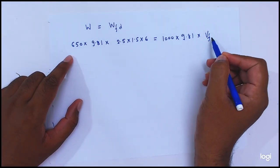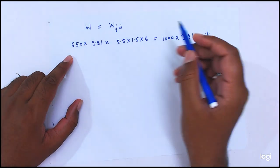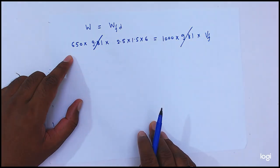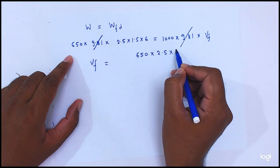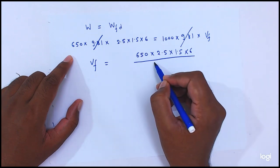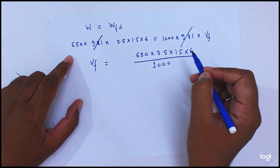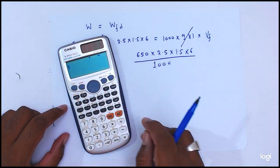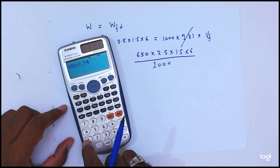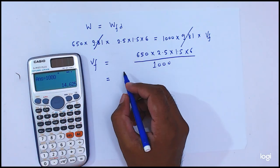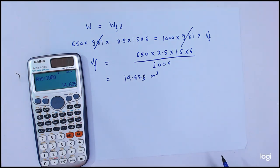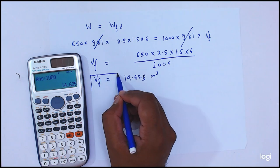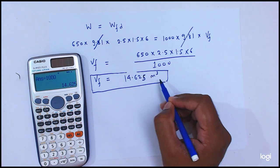Now, for the volume of water displaced — 9.81 cancels out on both sides. So V_F is equal to 650 times 2.5 times 1.5 times 6 divided by 1000. This comes out to 14.625 meter cube. So the volume of the water displaced is 14.625 meter cube.